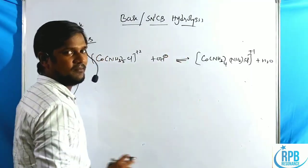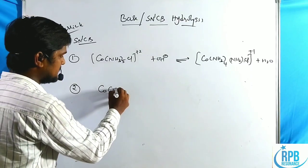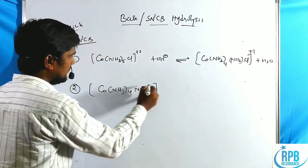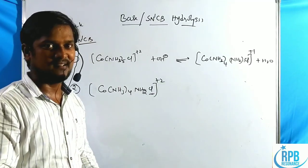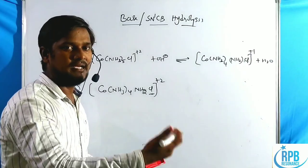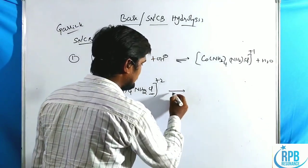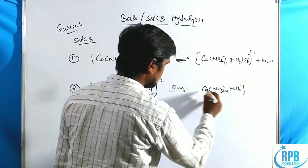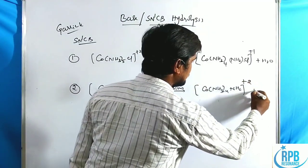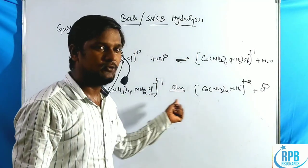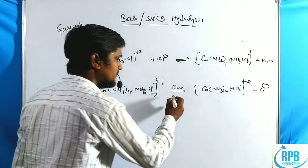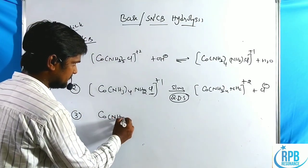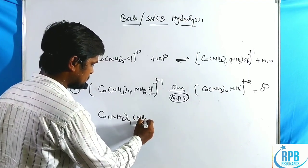In the second step, Co(NH3)4(NH2)Cl — where Cl minus is the leaving group (an acid/base labile group) — in a very slow step, Cl minus is eliminated, forming Co(NH3)4(NH2) with a plus-one charge. This step is the slow step, and therefore the second step is the rate-determining step.